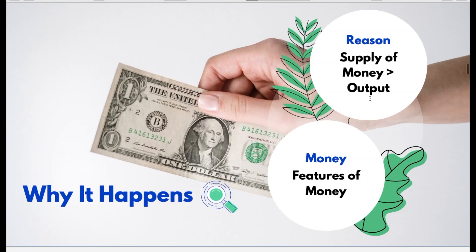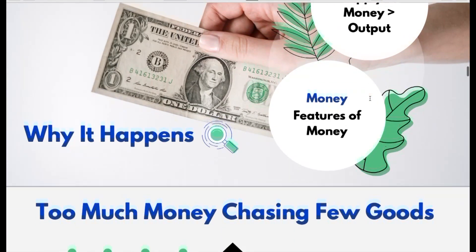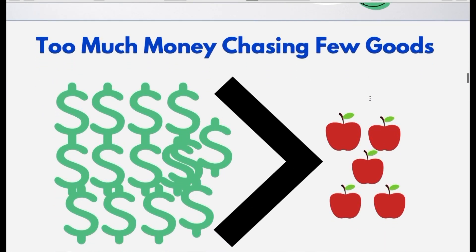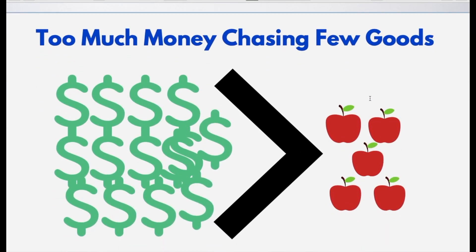Let's discuss this through an example: too much money chasing few goods. Please look at the chart on the left-hand side — there are a lot of dollars chasing very few apples. There are only five apples and a lot of money in the economy. Ultimately, this will lead to an increase in the prices of the apple.